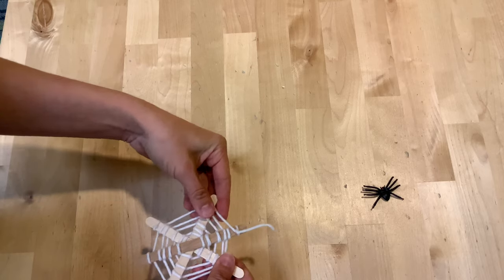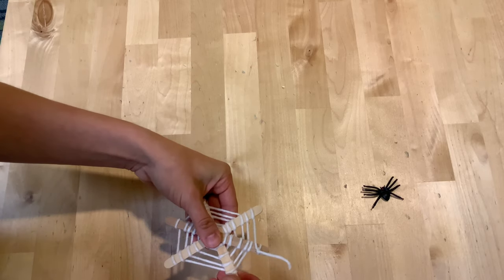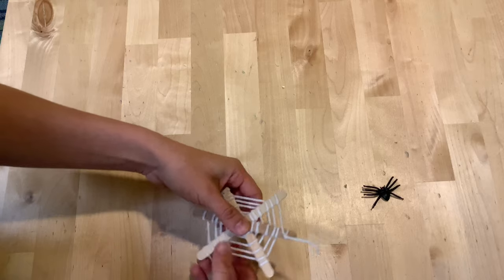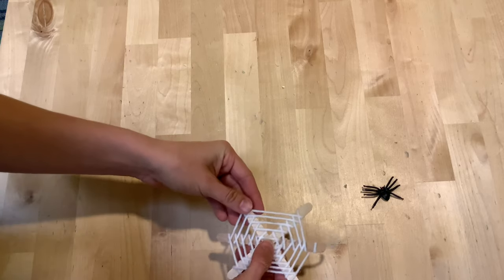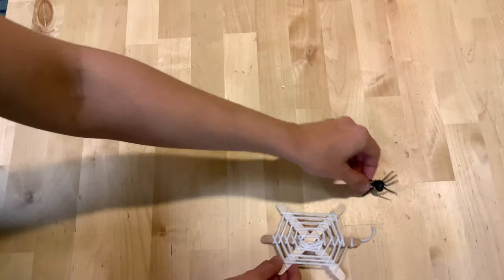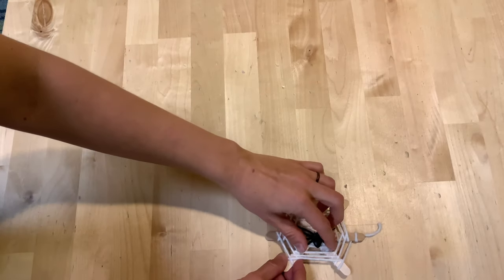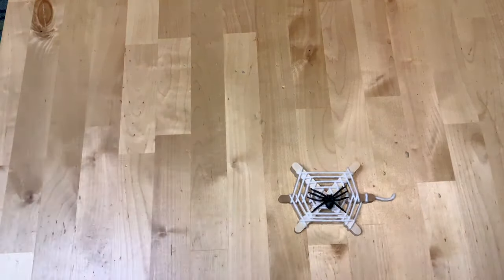Now you can kind of pull out all the string. Pull it outward on your popsicle sticks so that it stretches. Flip your popsicle stick over, and place your spider in its web. And now you have a popsicle stick woven web.